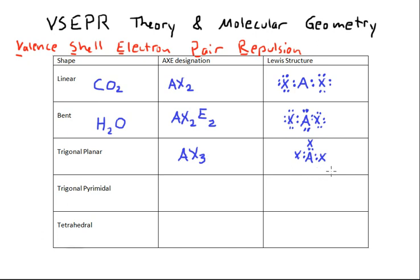AX3 will give us a trigonal planar geometry with an angle of 120 degrees. You see here that this structure doesn't really show us that, but that is, in fact, a shape that the molecule would have. A molecule like boron triiodide would have a trigonal planar geometry.